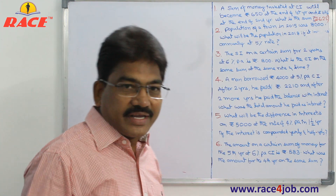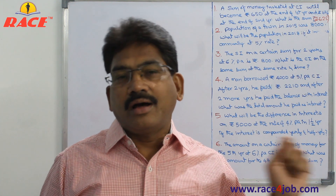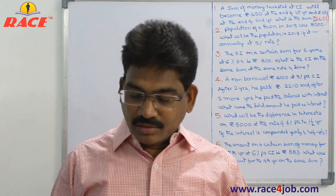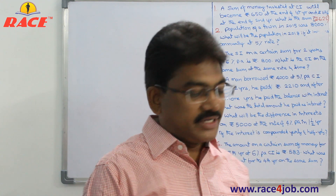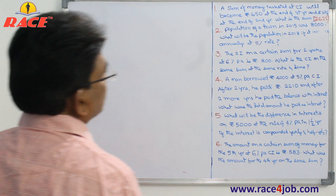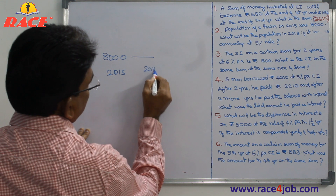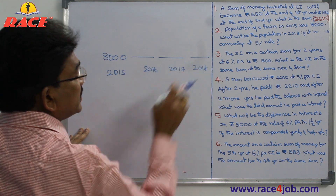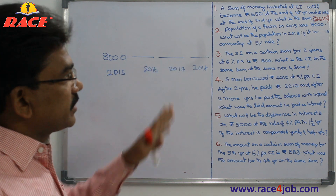So the same concept applies here. I told you in the earlier video about three methods. One is using the formula, second is to calculate interest separately and add, and third is 105% of 105% of 105% method. We can use that method for population. In 2015 the population is 8000, and we need 2016, 2017, and 2018 — after three years. So calculate 105% of 105% of 105% of 8000.